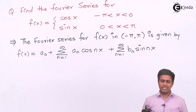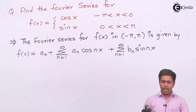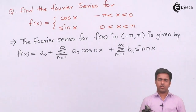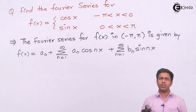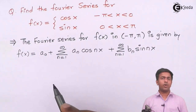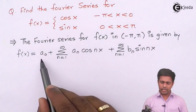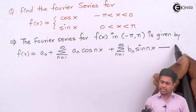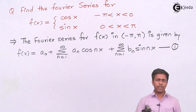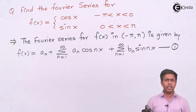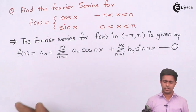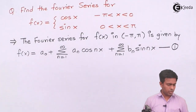This is the formula. To get the Fourier series — the expansion of the given function in terms of sine and cosine — we will find the unknowns a₀, aₙ, and bₙ. I will call the Fourier series equation number one, then find a₀, aₙ, bₙ, substitute into equation one, and get the Fourier series for the given function.